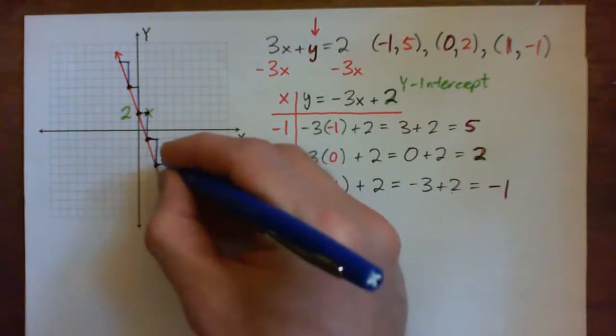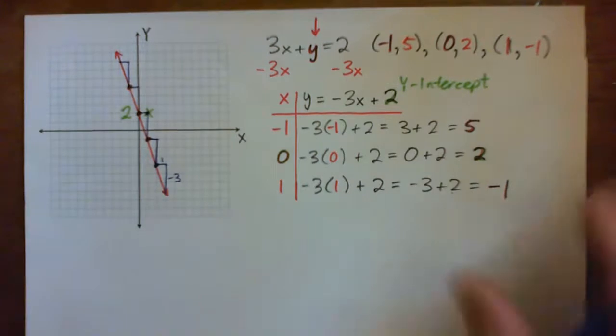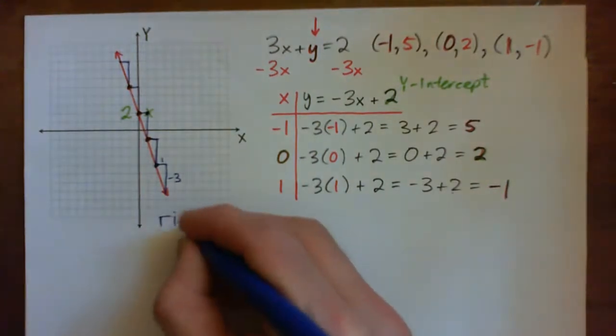So, every time I go over 1, I go down 3, right? And we call that the rise and the run, right?